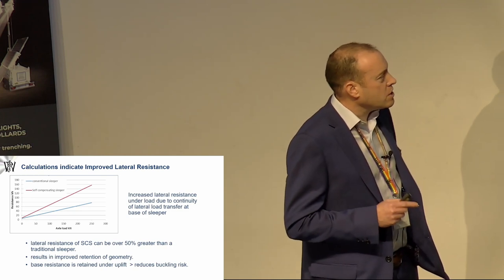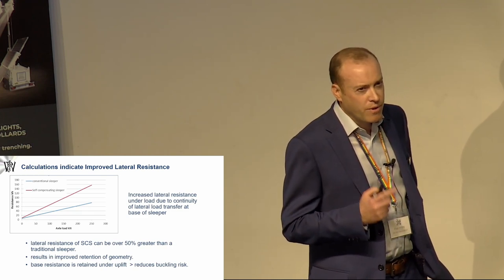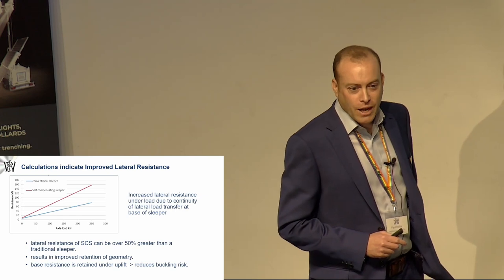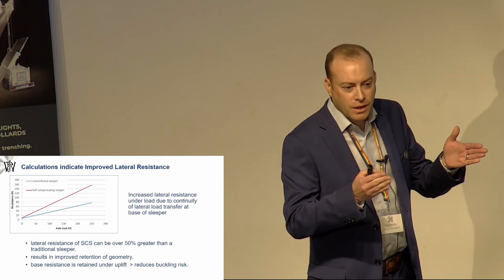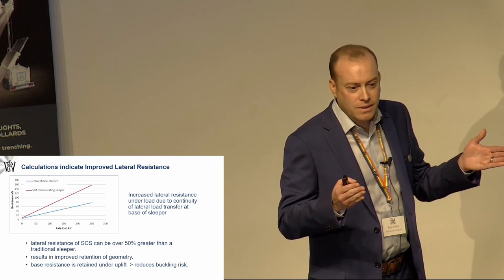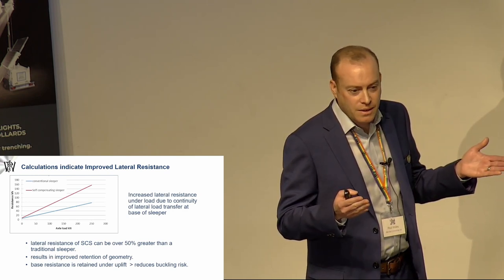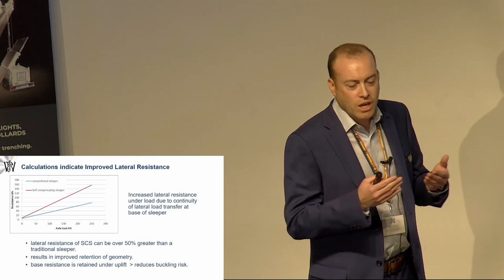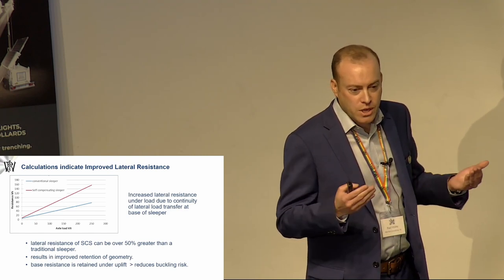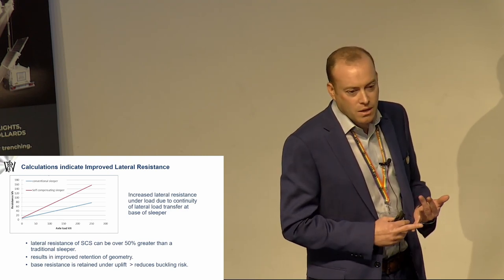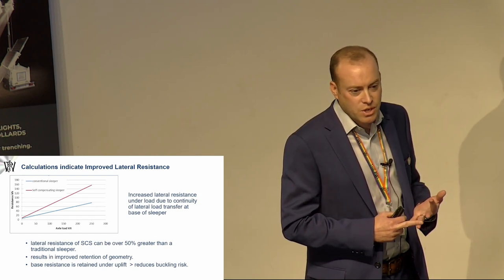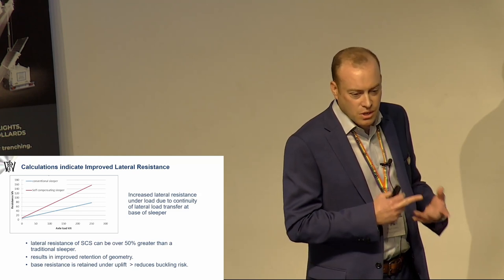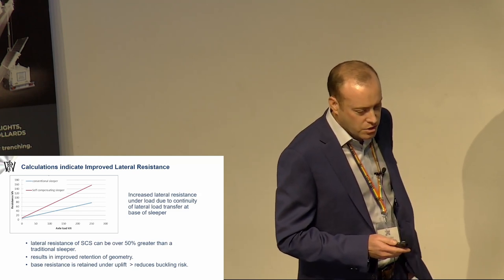The base resistance within the sleeper, so effectively, not to blow the rail industry's mind, but we could almost take the middle of that sleeper out and have it almost like a bi-block system within ballast. It holds that much retention. We actually don't really need the middle of the sleeper or the ends. We could take ballast shoulders away. So the base resistance of the sleeper, the end resistance, and the longitudinal was greatly increased.